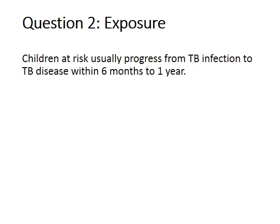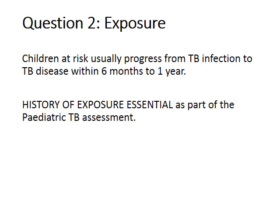Once you've assessed age and HIV status, it's very important to find out about exposure. You cannot develop TB disease without TB infection. In adults we don't focus as much on exposure because they may have been exposed years before and are more mobile. But this is different for children — the younger the child, the easier it should be to find out if they've been exposed to somebody with TB. High-risk children — very young or HIV-positive — will progress to TB disease within six months to a year of infection, so you should be able to get a history of exposure within that time period.